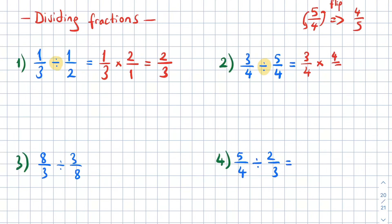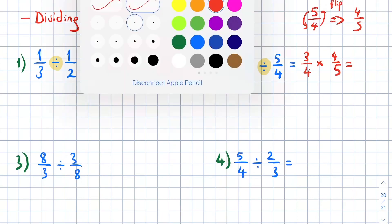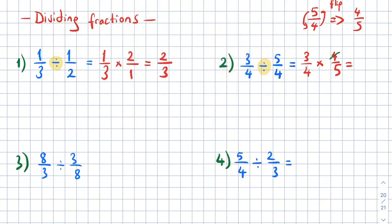We can simplify: four on top and four on the bottom cancel out, leaving one and one. So three times one is three, and four times one times five is five. The result is three over five.